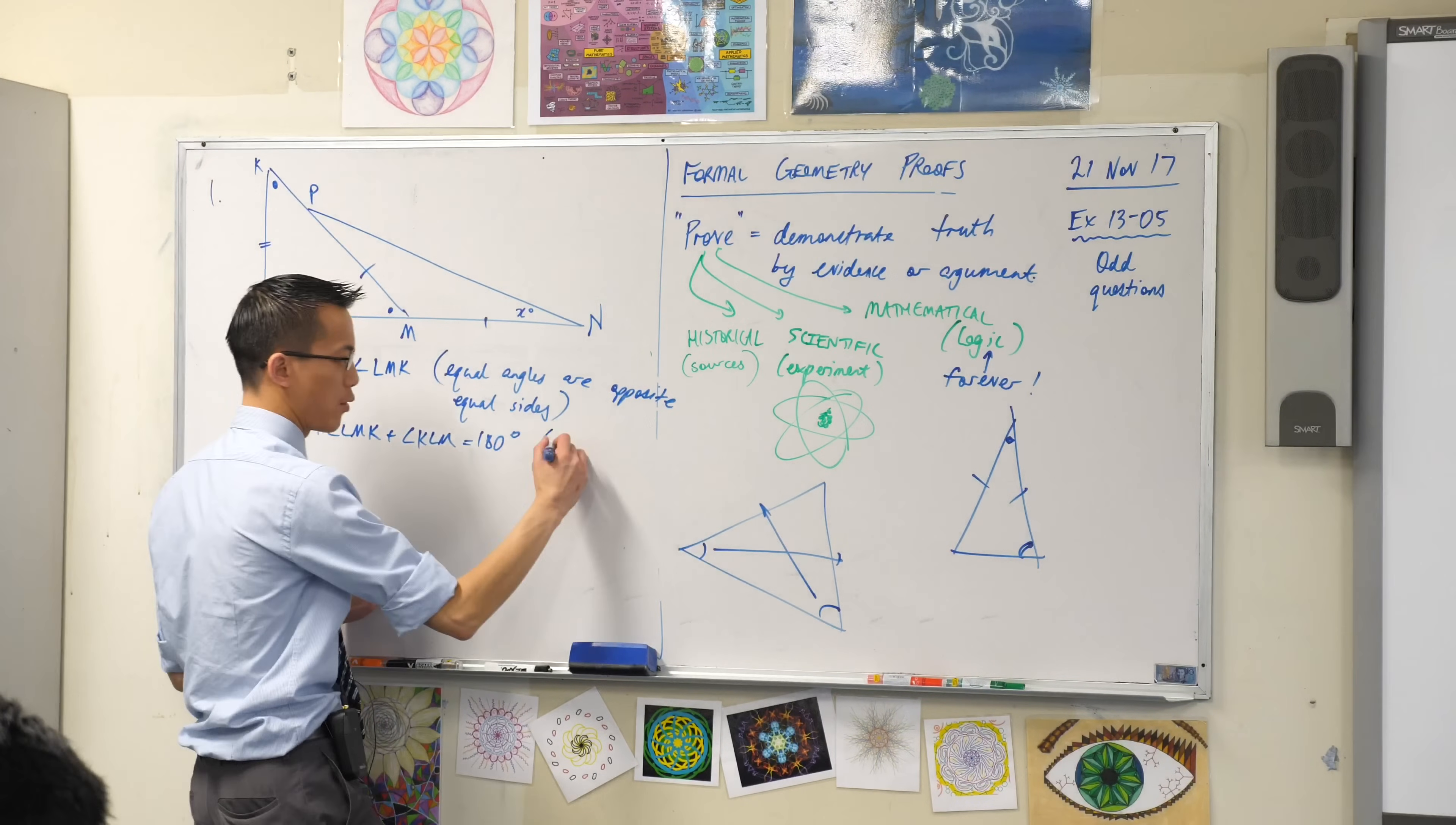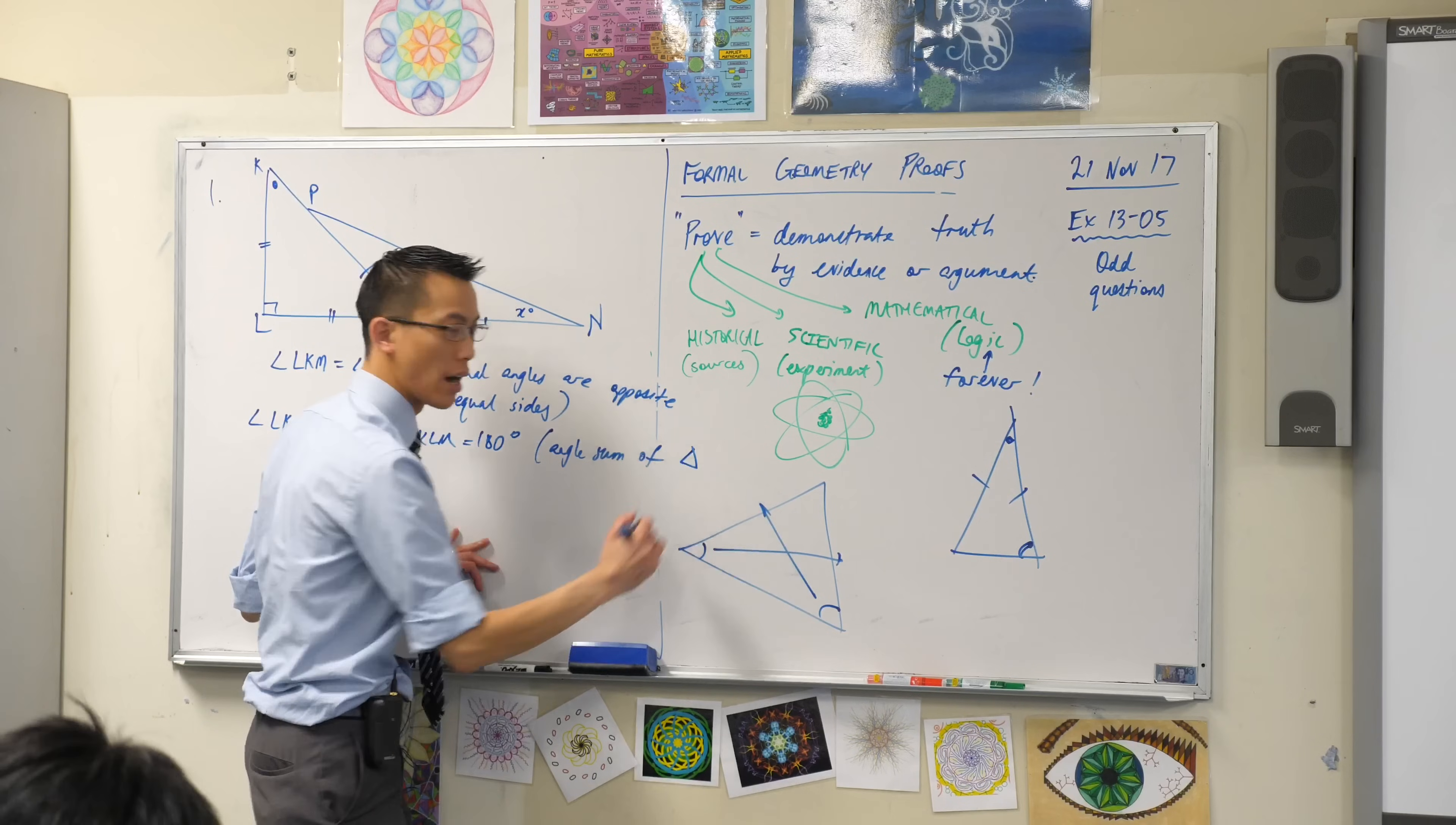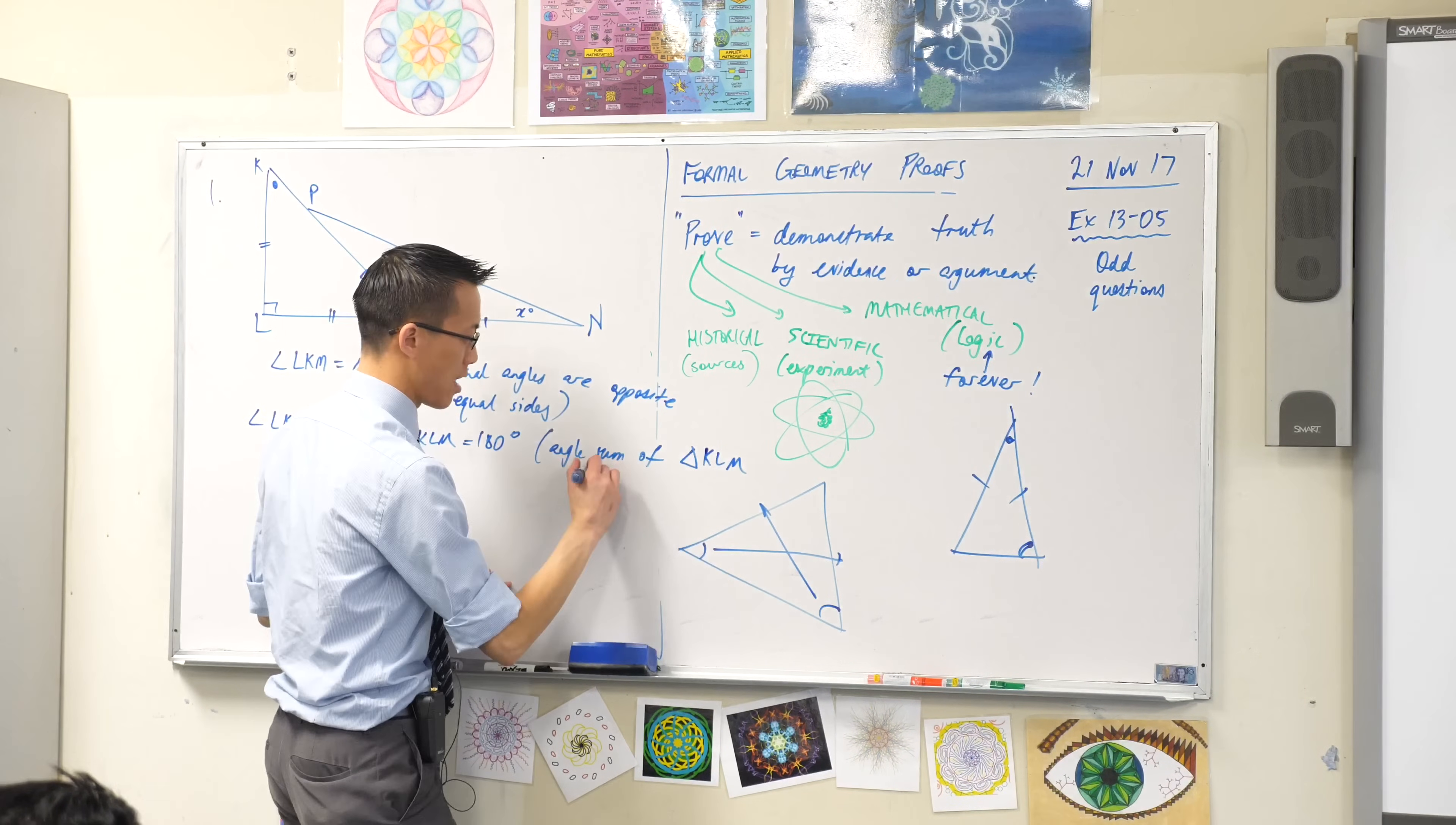Just like before, we need a reason. I'm going to need a bit more space here. My reason is, just like we were just saying, the angle sum of—I'm going to encourage you to name the triangle you're talking about. Not just because it shows you understand the diagram better. KLM. It's actually faster to write than to say a triangle. So that's a bonus. It's 180 degrees.